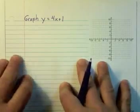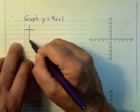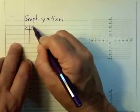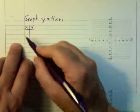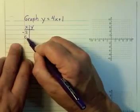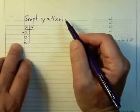We'll first do this by hand by generating a t-table that gives us a representative sample of ordered pairs that satisfy the given equation. I'm going to select values for input: a negative value, 0, and a positive value, and then determine the output using the equation.